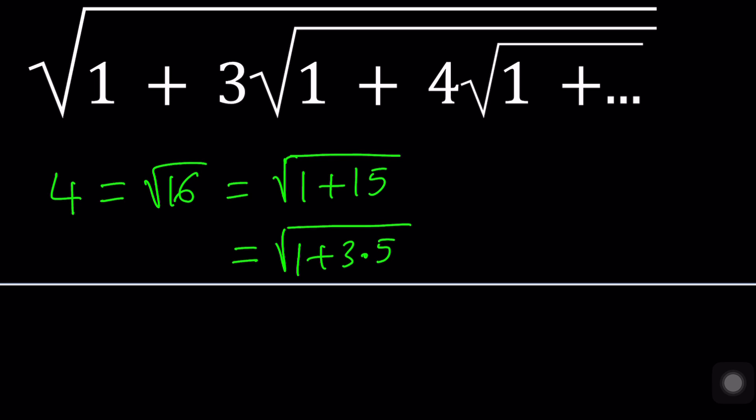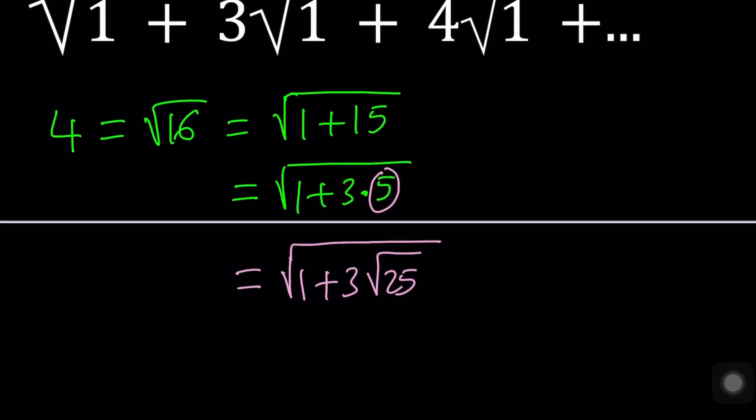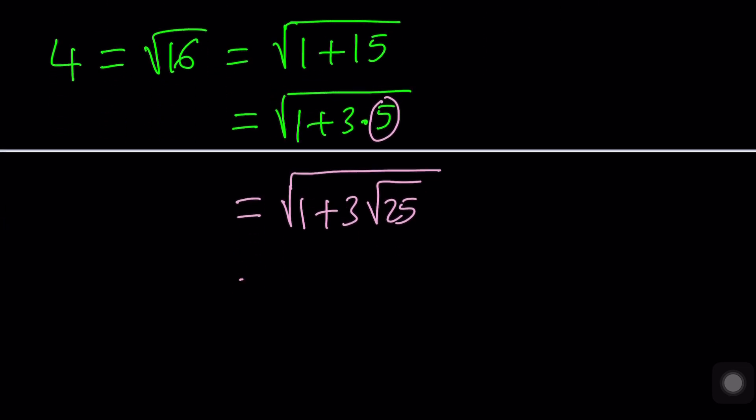The next thing we're going to do is take the 5 all the way on the right hand side and write it as the square root of 25. And what is so special about these numbers is that 25 can be written as 1 plus 24, and 24 is the product of two consecutive even numbers. So we're going to alternate between odds and evens.